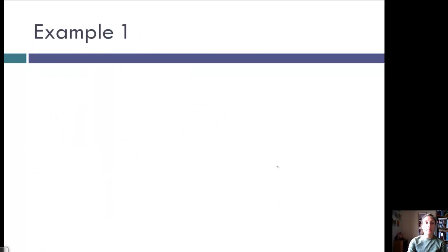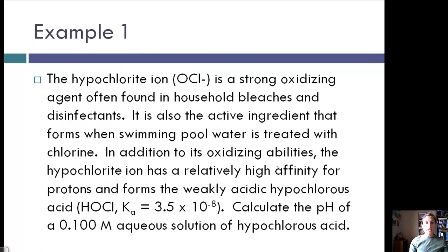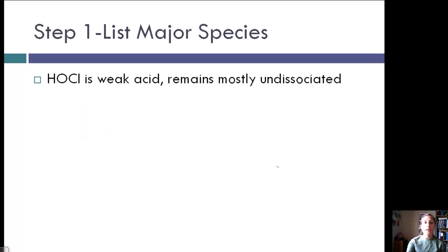Let's apply this to an example. The hypochlorite ion, OCl⁻, is a strong oxidizing agent used in household bleaches and disinfectants. It is also the active ingredient formed when swimming pool water is treated with chlorine. The hypochlorite ion has a relatively high affinity for protons and forms the weakly acidic hypochlorous acid, HOCl, with a Ka value of 3.5×10⁻⁸. Calculate the pH of a 0.1 molar aqueous solution of hypochlorous acid. Step one — list the major species. Because it's a weak acid, it remains mostly undissociated, so our major species are HOCl and H₂O.